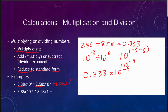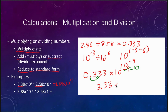That result is not in standard form — there is no non-zero digit to the left of the decimal. We move the decimal point one place to the right, which changes the exponent from negative 9 to negative 10. Our final answer is 3.33 times 10 to the negative 10th power.